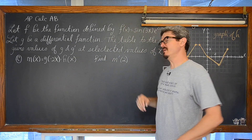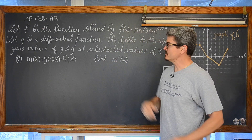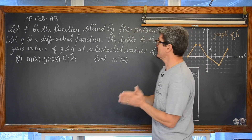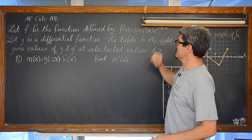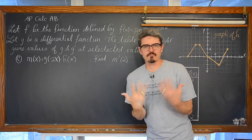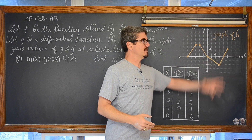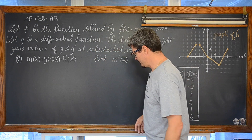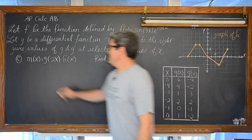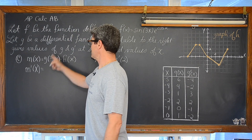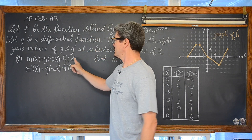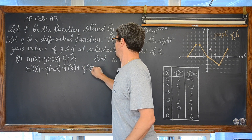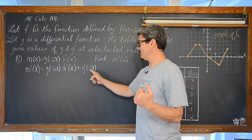In Part C, a new function is defined: m(x) = g(-2x) · h(x). Find m'(2). This is not much different from Part A — we have a product of two functions, just given via tables and graphs. Applying the product rule: m'(x) = g(-2x) · h'(x) + h(x) · g'(-2x) · (-2). The g'(-2x) term requires the chain rule — derivative of the outside function g' times the derivative of the inside, which is -2.